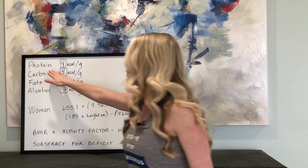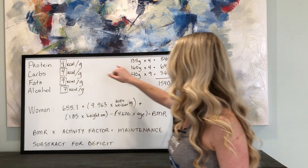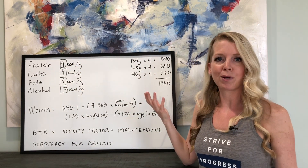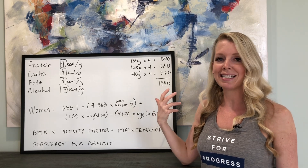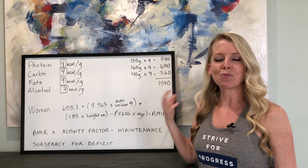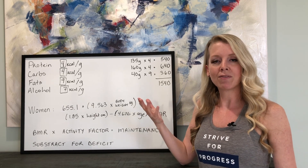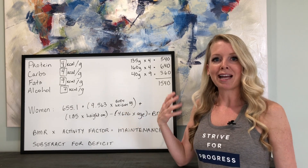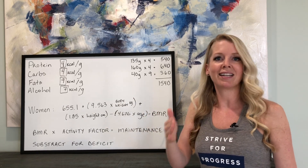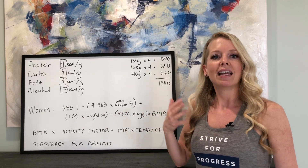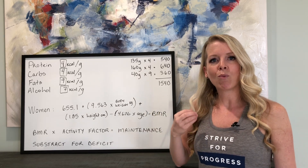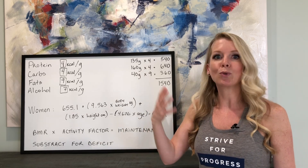Protein has 4 calories per gram, so 135 grams times 4 equals 540 calories. Subtract that from the total, and in this case there are 1,000 calories left to divide between carbs and fat. How you proceed is entirely up to you. A lot of people think one diet approach is better than another, but it really is based on preference and what's going to be sustainable for you long term.